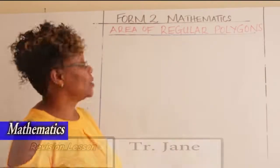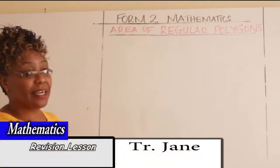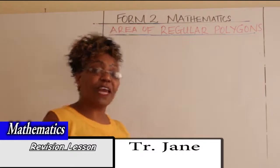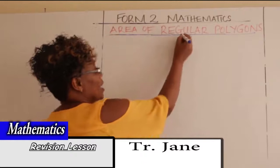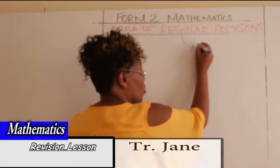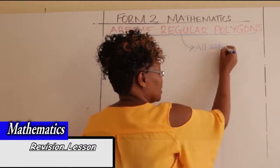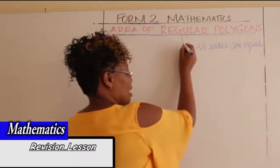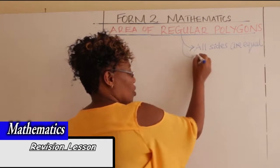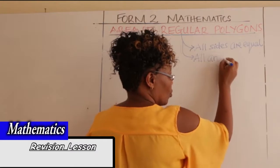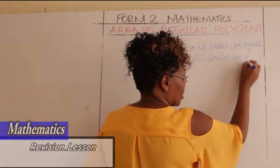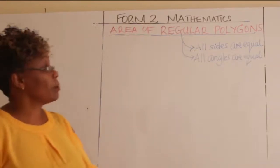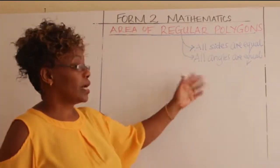Hi learner, once again we are here with Form Two Mathematics. We are going to look at how to find the area of regular polygons. What do we mean by 'regular'? Regular means all the sides of the polygon are equal, and therefore if the sides are equal, all the angles are also equal.